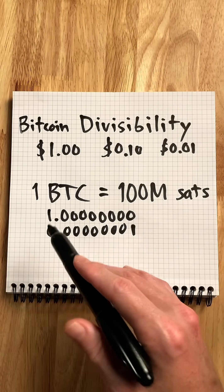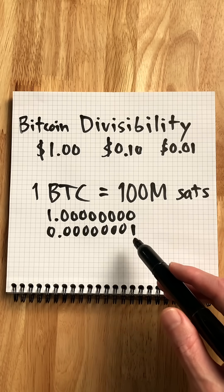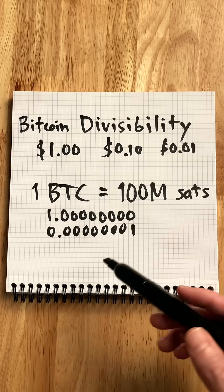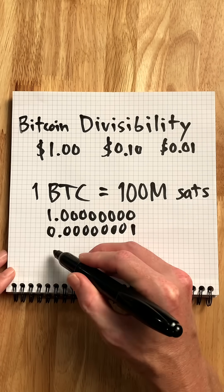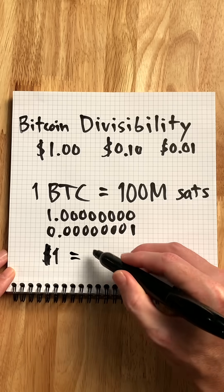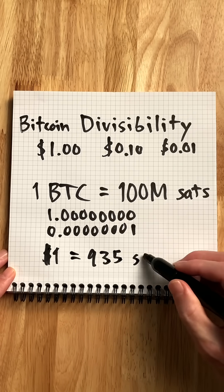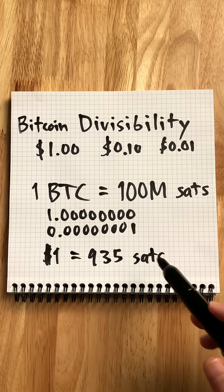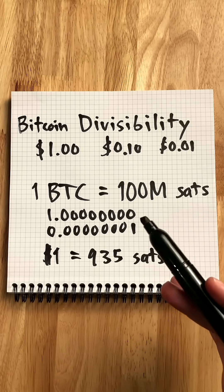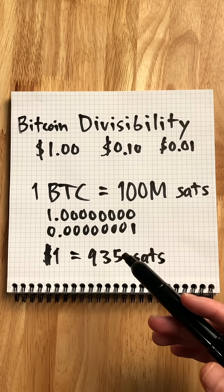You can have one full Bitcoin, or you can have one Satoshi, or anywhere in between. You can have a million Satoshis, you can have a thousand Satoshis. In fact, one dollar today equals about 935 Satoshis. Due to Bitcoin's high divisibility, Bitcoin is accessible to anyone, regardless of its dollar price. And that's Bitcoin divisibility, put simply.